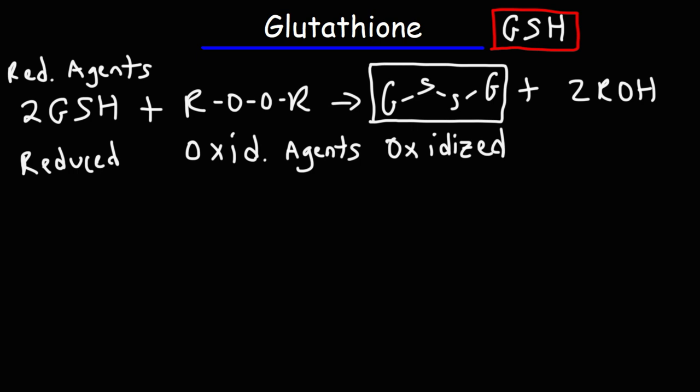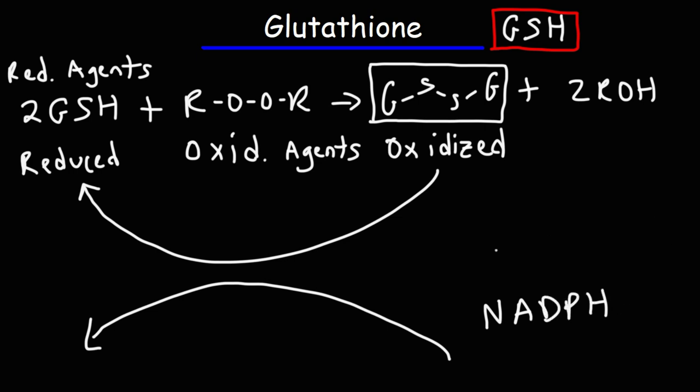Glutathione disulfide can be recycled from its oxidized state back into its reduced state, into glutathione, using NADPH. NADPH is a reducing agent. It's an electron donor. It can give electrons back to the oxidized form of glutathione. And in the process, NADPH is oxidized to NADP+.